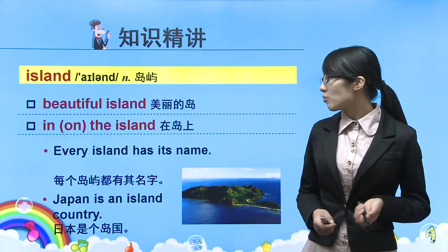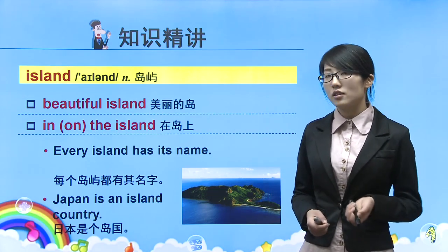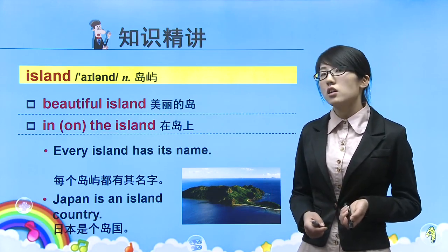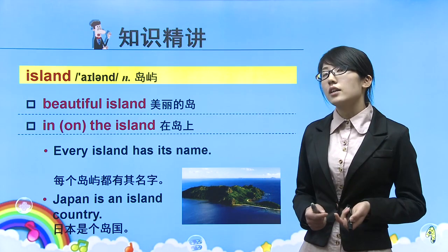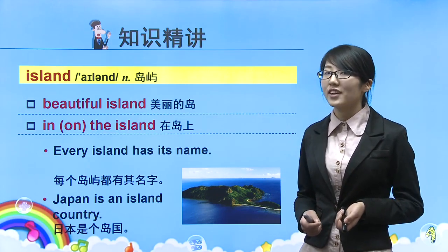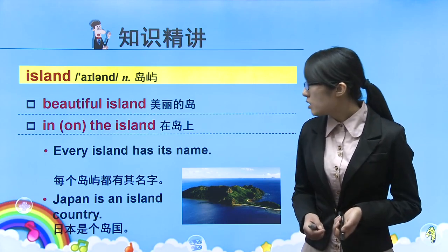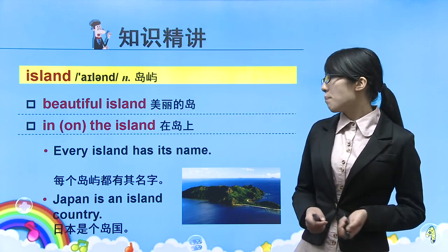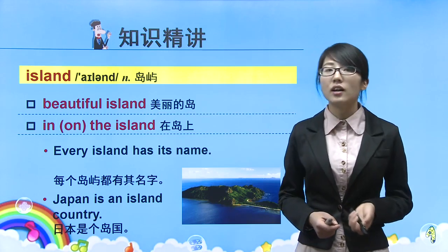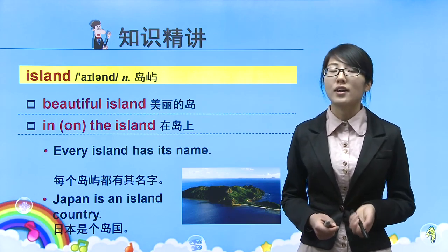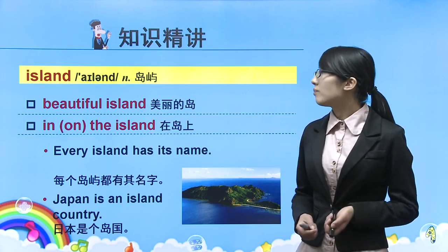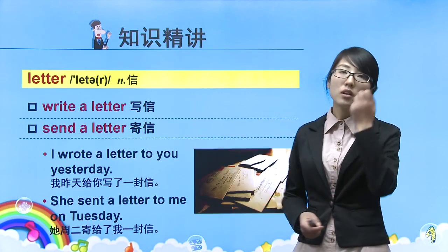Next word: island，岛屿，注意S不发音，读/ˈaɪlənd/。短语：beautiful island，美丽的岛屿；in or on the island，在岛屿上。Sentences: Every island has a name. 每个岛屿都有其名——every island是单数，用has不用have。Japan is an island country. 日本是个岛国，country是国家的意思。